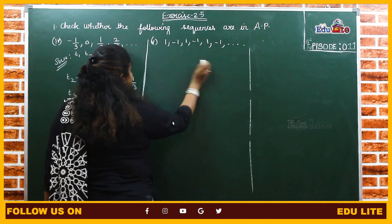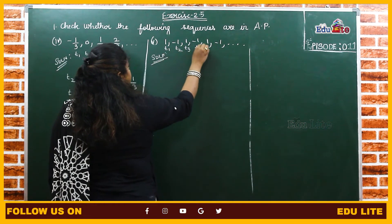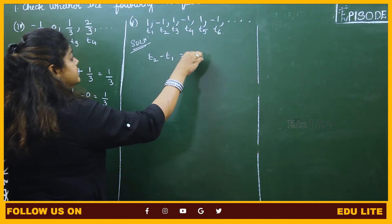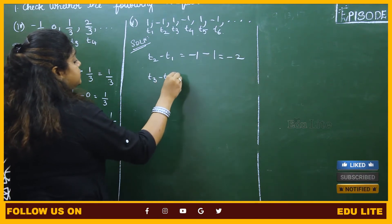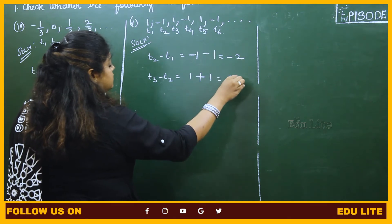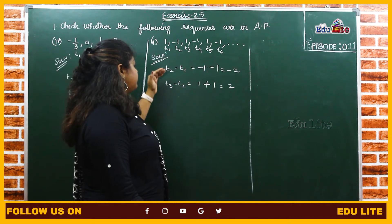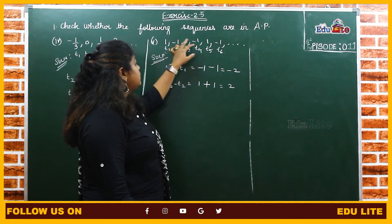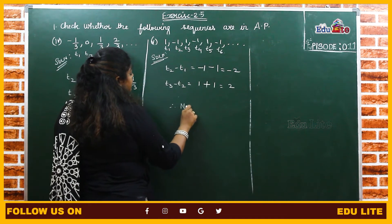For the fifth subdivision, we identify T1 through T6. T2 minus T1: T2 is minus 1 minus T1 which is 1, so minus 1 minus 1 equals minus 2. T3 minus T2: T3 is 1 minus T2 which is minus 1, becoming plus 1, which is 2. Since minus 2 and 2 are not equal, the difference between any two consecutive terms is not equal. Therefore, the above sequence is not an AP.